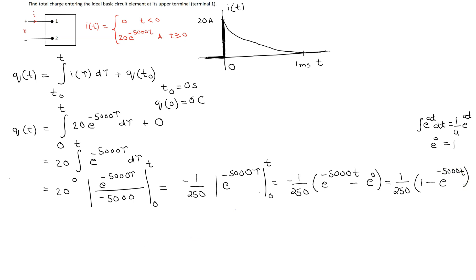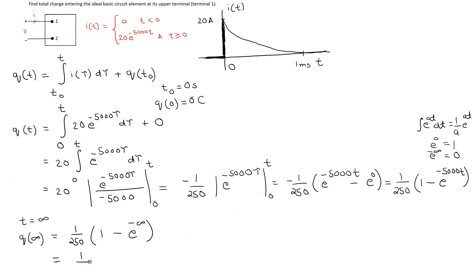We now have a general expression for the charge. To find the total charge, we set time t equal to infinity. Substituting t=∞ gives (1/250)(1 minus e^(-∞)). Since e^(-∞) is 0, the total charge is 1 over 250 coulombs, which equals 4 millicoulombs or 4000 microcoulombs.